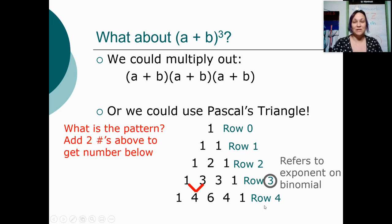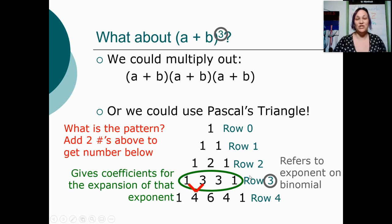So in this problem, (a + b) to the third, I want to use the third row, the 1, 3, 3, 1 row. The 1, 3, 3, 1 is going to tell us our coefficients for our final answer. Coefficients, remember, are the large numbers in front of the variables. So when I multiply out (a + b) to the third power, I'm going to expect to get four terms in my answer. And I think that my coefficients are going to be 1, 3, 3, and 1.